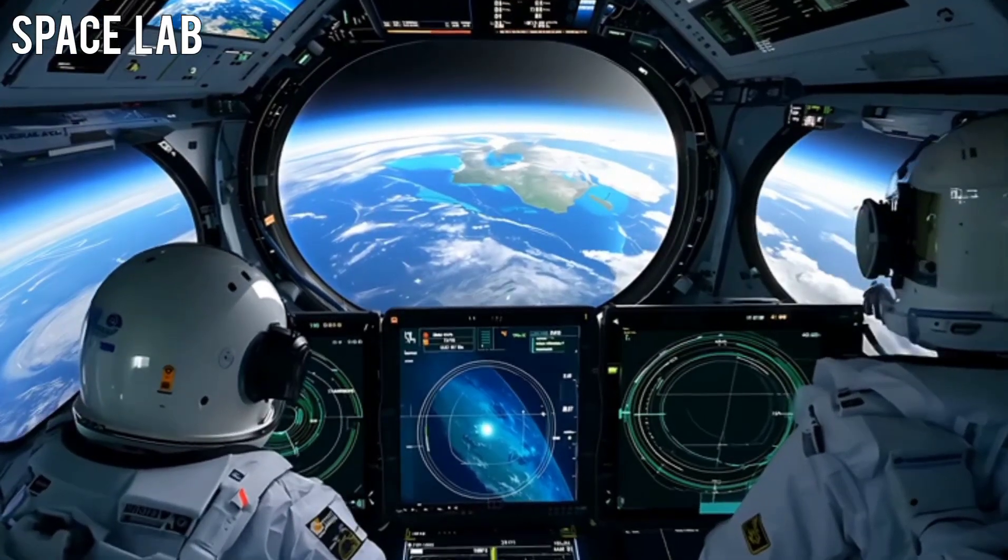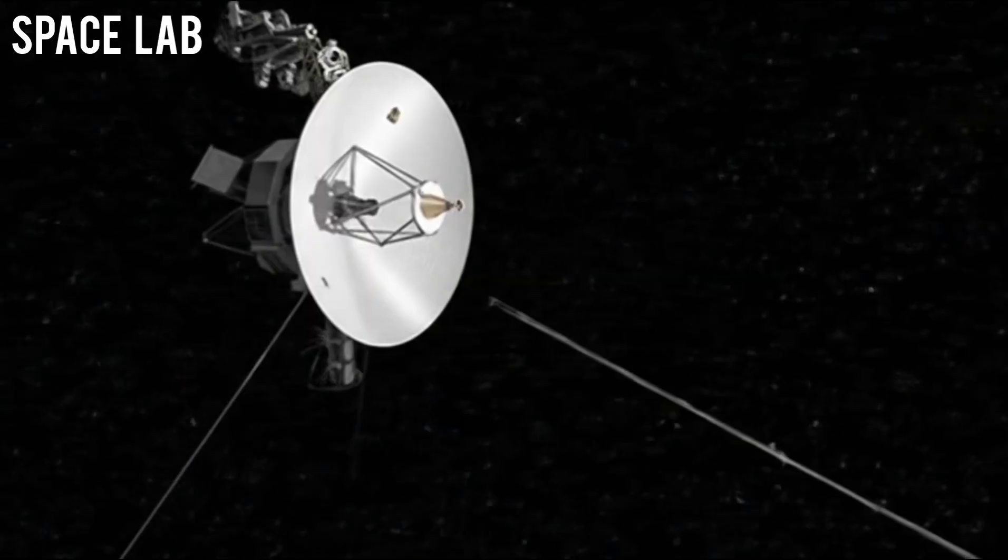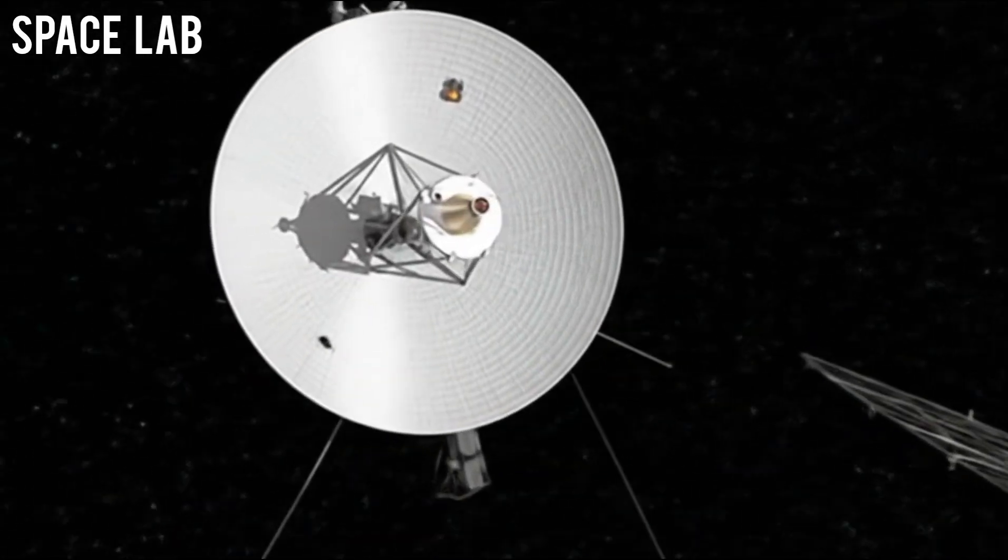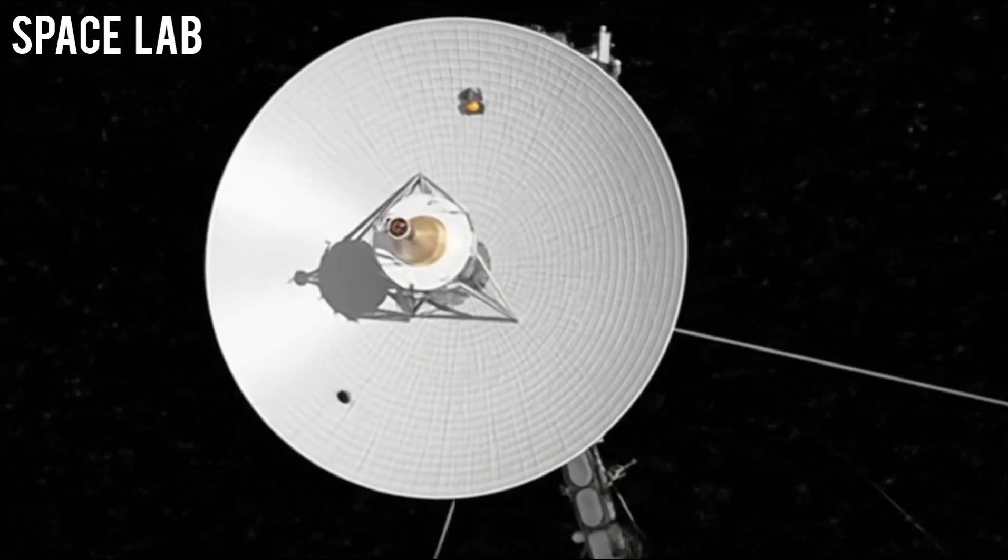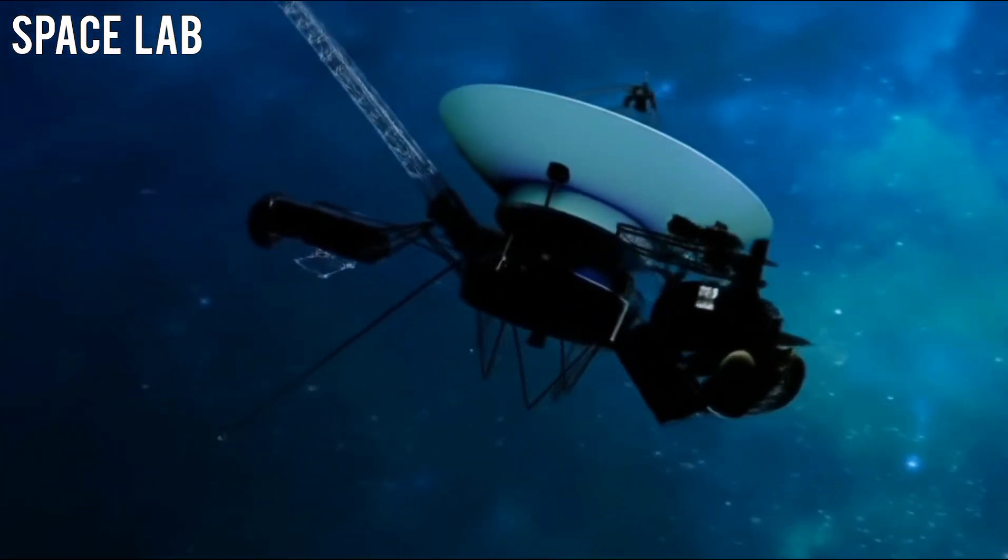In 1977, humanity launched two small spacecraft toward the unknown, Voyager 1 and Voyager 2. Their mission was simple yet profound: to explore the outer planets and send back whatever they could before their energy faded into silence.